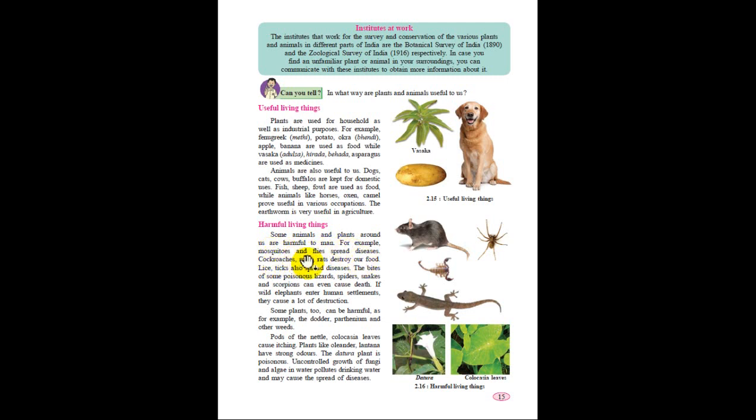Harmful living things. There are also some harmful living things. Some animals and plants around us are harmful to man. For example, mosquitoes and flies spread disease. Due to mosquitoes, most people suffer from dengue or malaria. Cockroaches and mice destroy our food. Lice also spread disease. The bites of some poisonous lizards, spiders, snakes, and scorpions can even cause death. If wild elephants enter human settlements, they cause a lot of destruction.